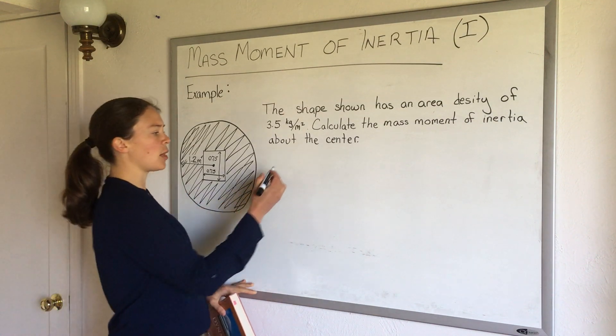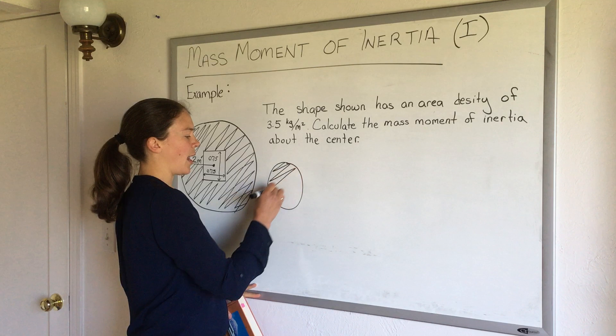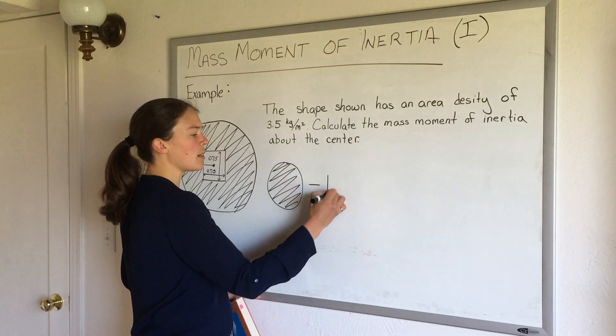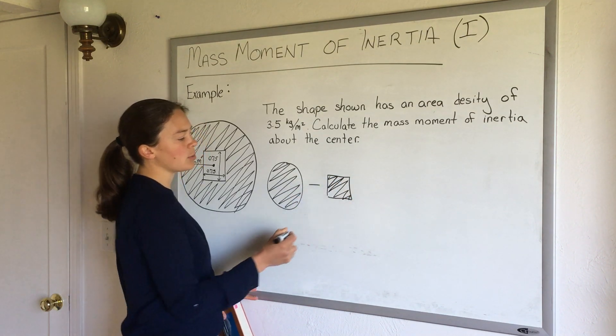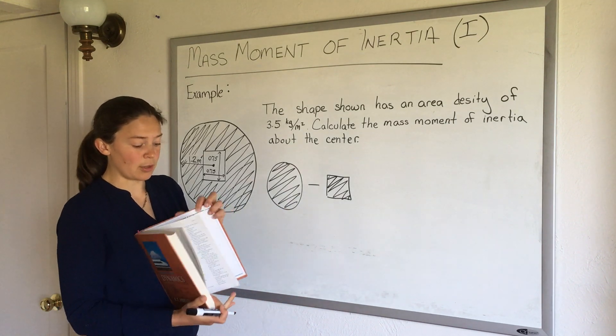So for this shape we can say this shape looks just like that circle that we always had or that we've had before and I'm just missing that little square in the middle. And I could easily calculate the mass moments of inertia of both of these shapes using a table like the one in the textbook.